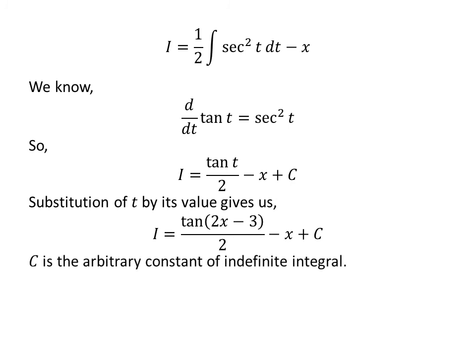Substituting t back by its value gives us i is equal to half of tangent of 2x minus 3, minus x, plus capital C.